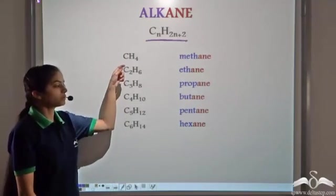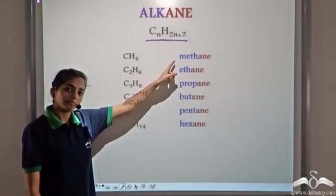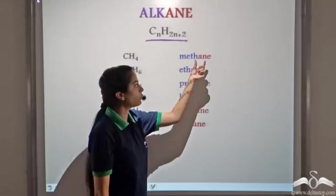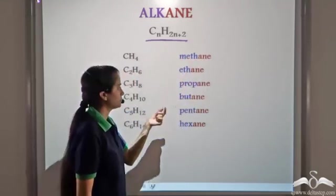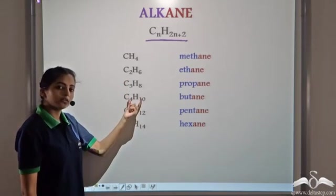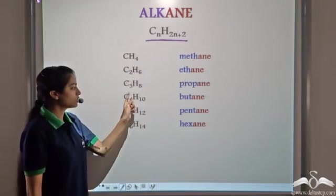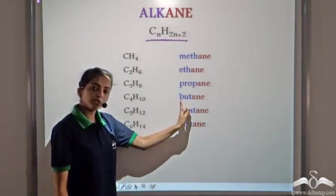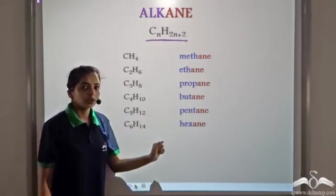So if we start with n=1, we get CH4; the name given is methane. Since it's an alkane, it gets the suffix '-ane'. For one carbon atom we have 'meth', so the name is methane. Similarly, for other alkanes — say if we have C4H10, the general formula remains CnH2n+2. So for four carbon atoms we get C4H10. It is 'but-' and since it is an alkane, we have the suffix '-ane', so it becomes butane.